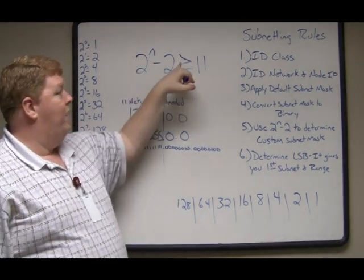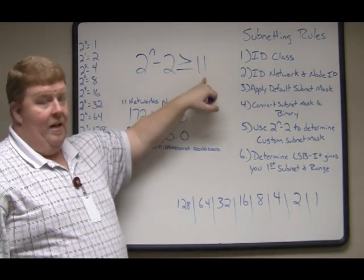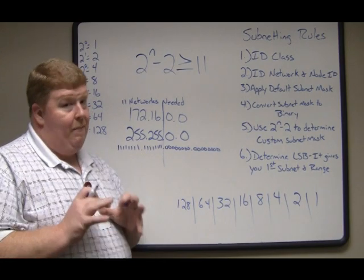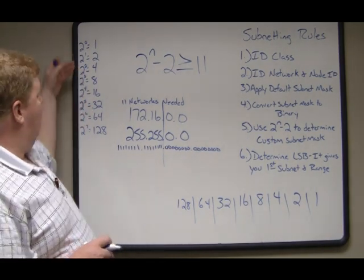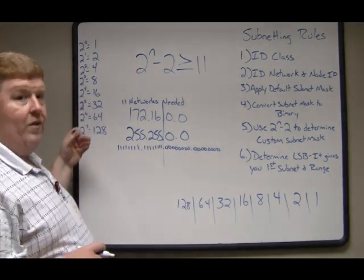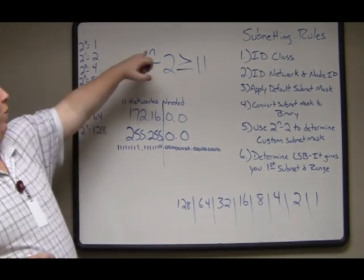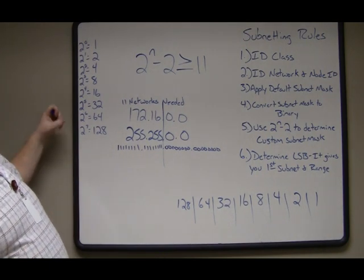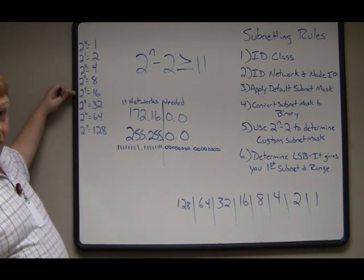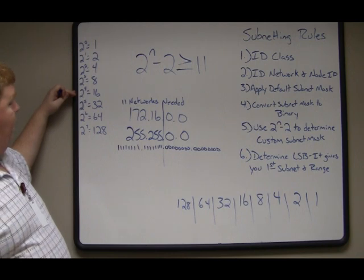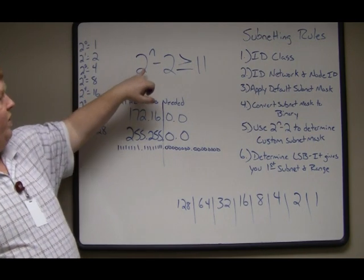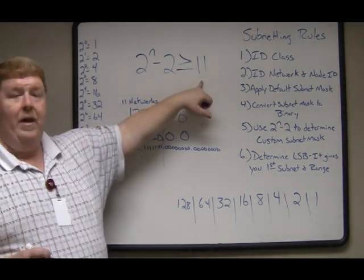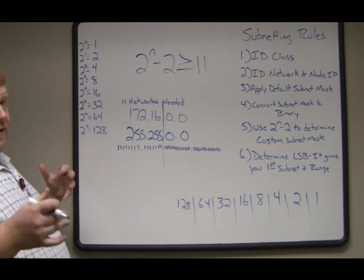Two to the power of something minus two must give us an answer that is greater than or equal to 11. It can be more than 11, it can be equal to 11 — it just can't be less than 11. This is where the two-to-the-nth chart comes into play. Two to the fourth is 16, so 16 minus 2 gives us 14, which is definitely greater than or equal to 11.